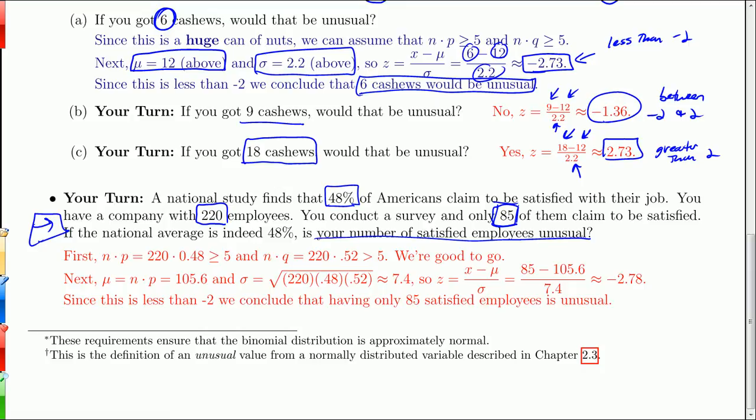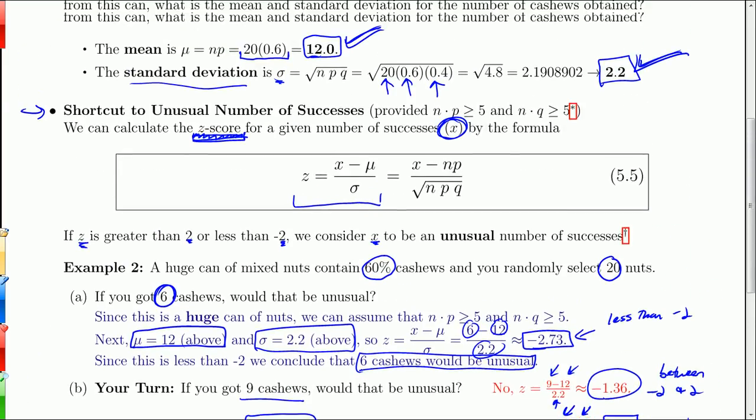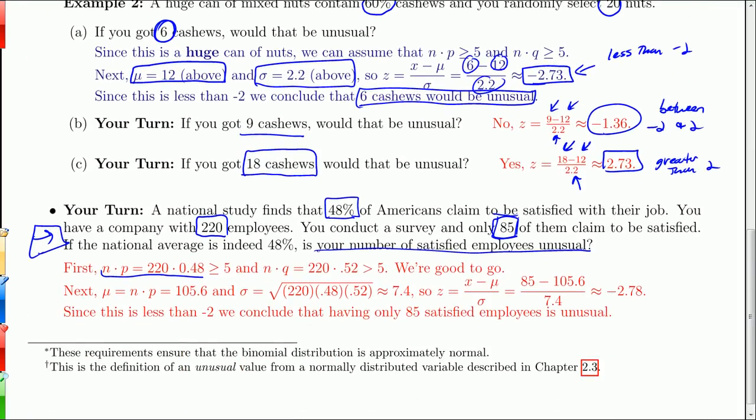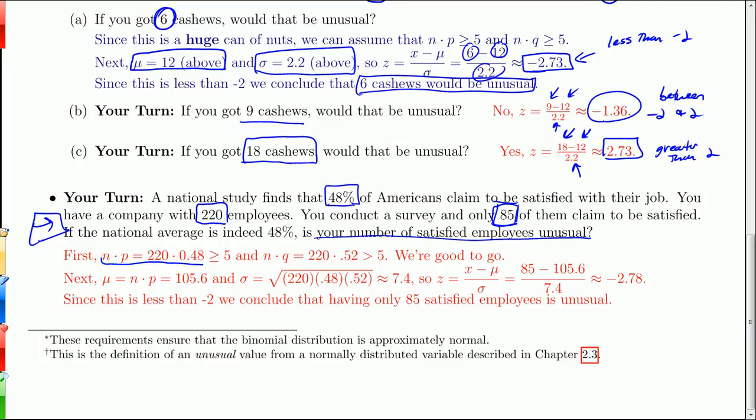First we need to get the mean and standard deviation for the number of satisfied employees in groups of 220. So the mean is n times p. Oh, by the way, there's one little catch on here that I forgot to mention. In order to use this, we need n times p and n times q to be bigger than 5. And that allows us to use the normal approximation. So that way we know the number of successes is normally distributed, and we can do that whole two standard deviations thing. So that's the first thing I'm checking here. If you look at n times p, that's certainly bigger than 5. It's like close to 110. If you look at n times q, that's 220 times 0.52. And that, again, is around 110. So certainly bigger than 5. We're good to go.